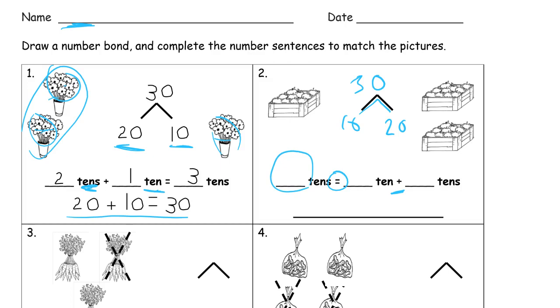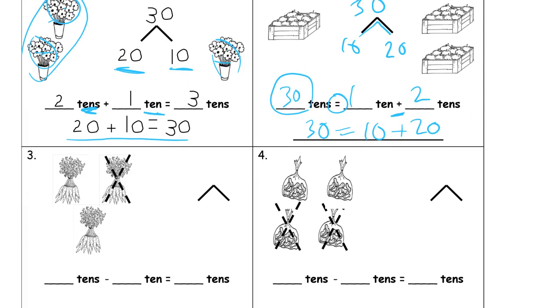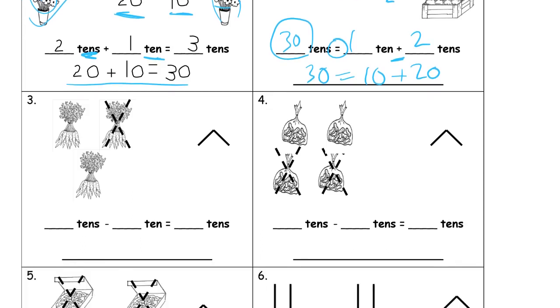That's 30 tens is equal to one ten plus two tens. And we're just going to write this as an equation. 30 equals 10, because one ten is 10, plus two tens is 20. 30 equals 10 plus 20. Now, that's how number sentences are. Sometimes you can have the total first, and then the addends on the other side of the equal sign.